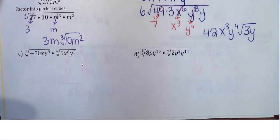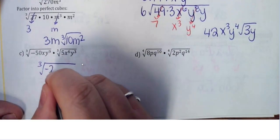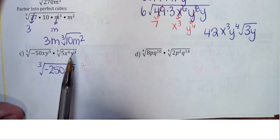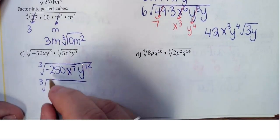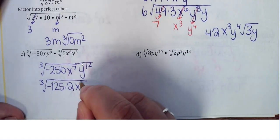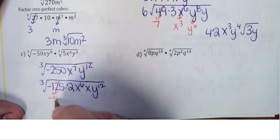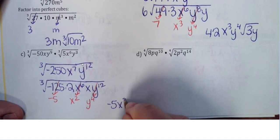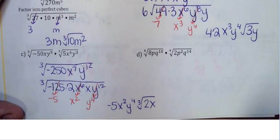Practice: cube root. ∛(-50xy⁹)·∛(5x⁶y³): multiply -50×5 = -250; for variables, x¹·x⁶ = x⁷, y⁹·y³ = y¹². Simplify ∛(-250x⁷y¹²): 250 = 125×2; x⁷ breaks as x⁶·x (not divisible by 3); y¹² is a perfect cube, left alone. This comes out as -5x²y⁴·∛(2x).